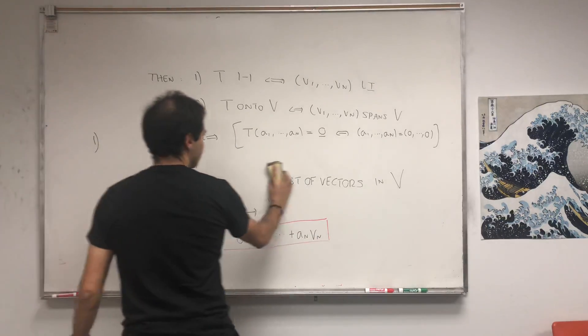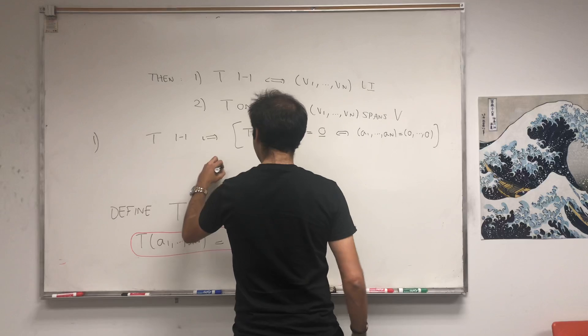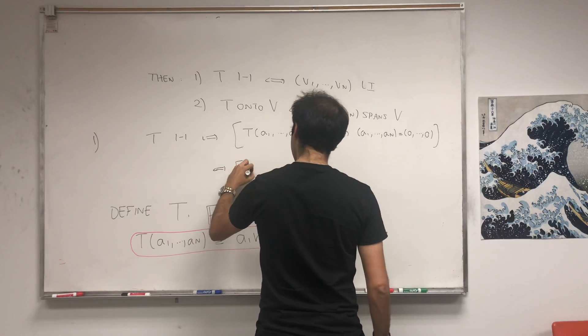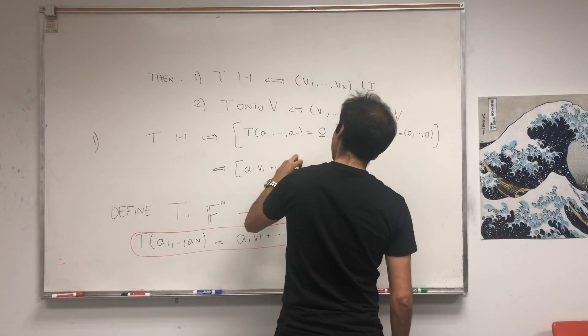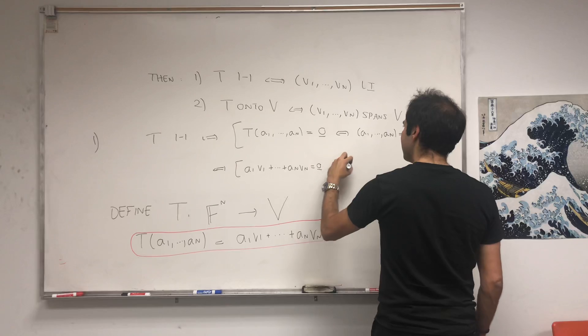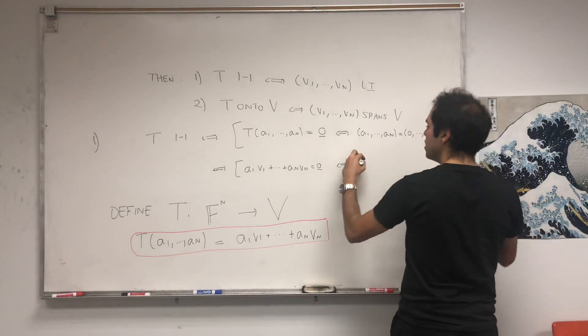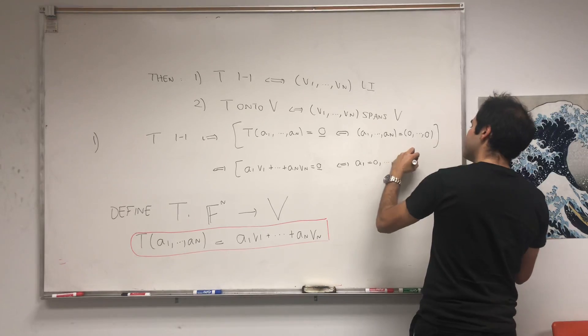Right, the definition of 1 to 1 for linear transformation is the only way the output is 0 is if the input is 0. If the null space is trivial. But remember the definition of t, that is the same thing as saying a1 v1 plus anvn equals 0 for a1 up to an. And it's if and only if this just means a1 equals 0 up to an equals 0.